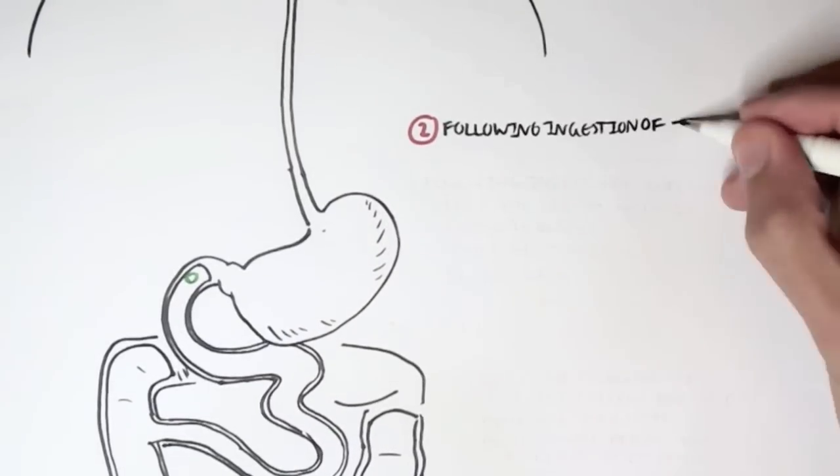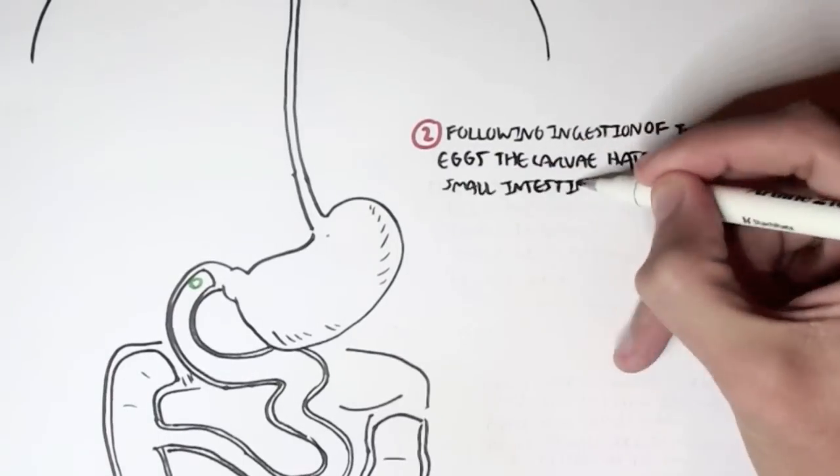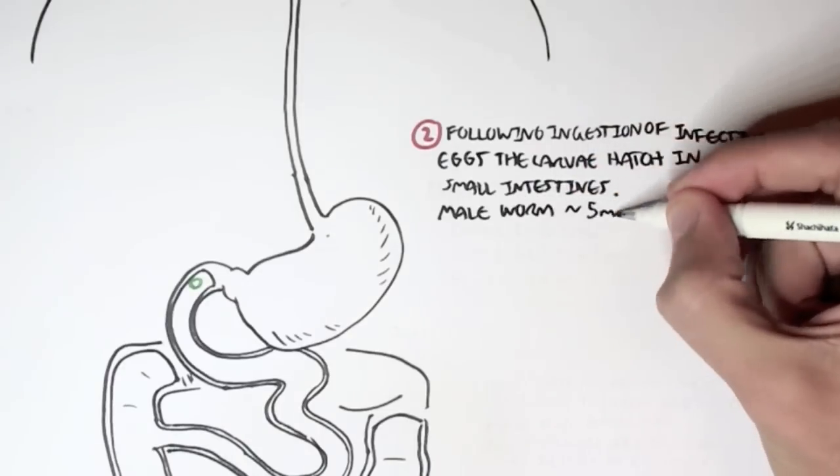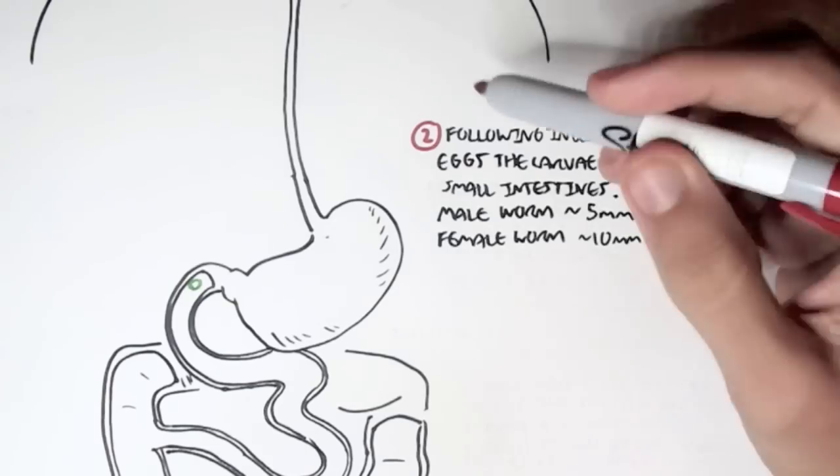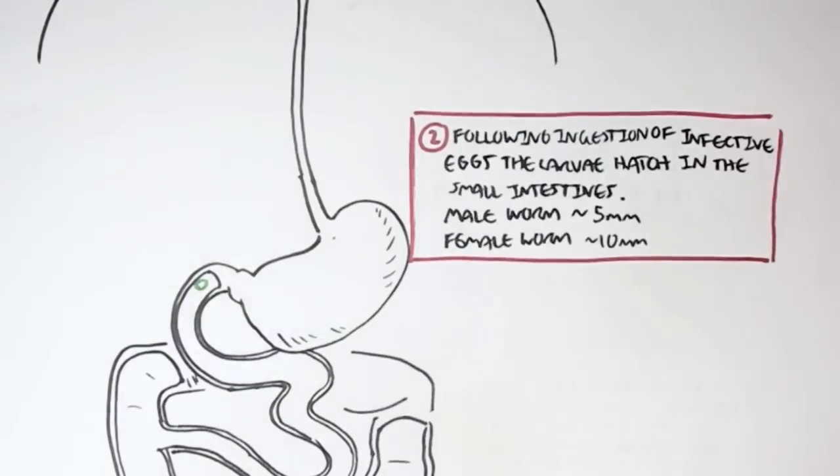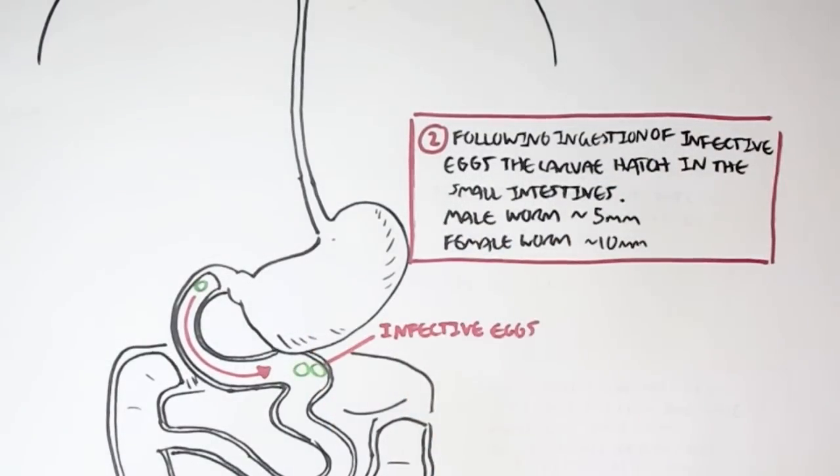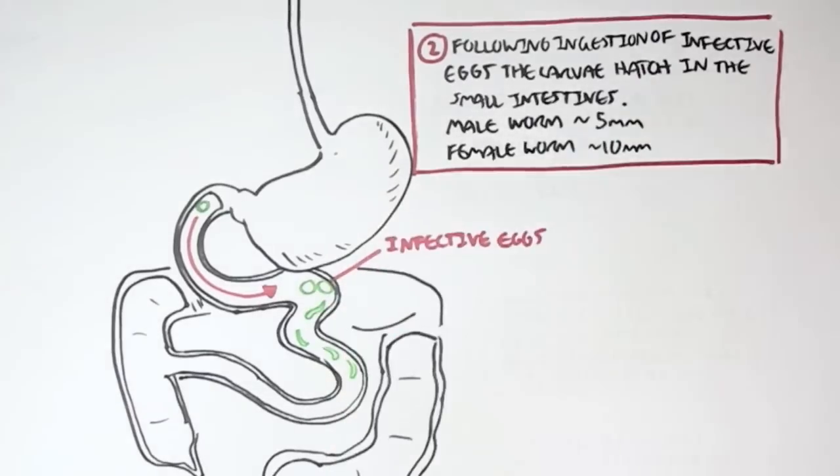So following ingestion of the infected eggs, the larva will hatch in the small intestines. The larva will become either a male worm or a female worm. A male worm is about 5mm long, a female worm is about 10mm long. So here you can see the infected eggs in the small intestines hatching. The larva will become worms. It can become a male worm or a female worm as shown here.